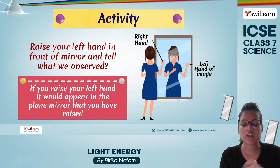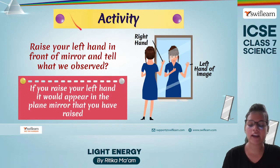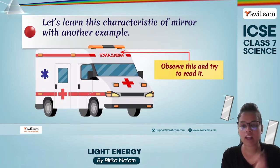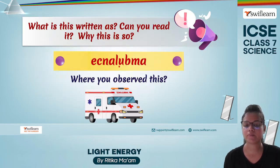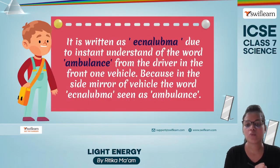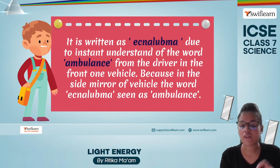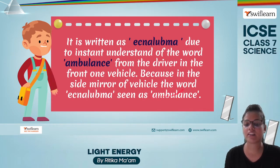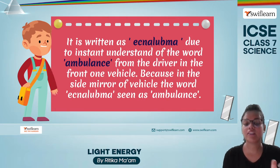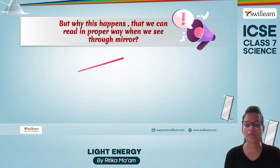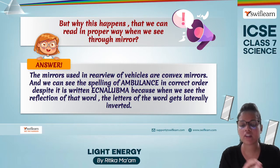If I tell you to raise your left hand in front of a mirror, you'll observe that it appears as your right hand — it appears as the opposite. A very common real-life example: have you seen ambulances? At the top of an ambulance, the word is written in a reversed format. This is because in the mirror of vehicles, those letters are seen as 'AMBULANCE' correctly, so that people can see what is behind them and give way to the ambulance.